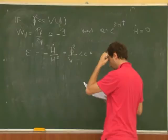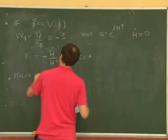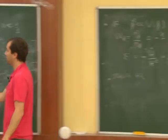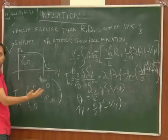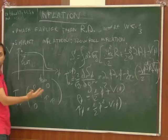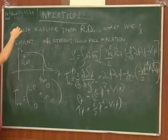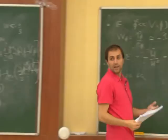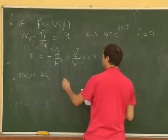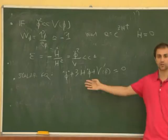During inflation, Ḣ ≈ 0, so H is approximately constant and w ≈ −1. It is not exactly −1 because the scalar field has a small kinetic energy and rolls a bit down the potential, so inflation eventually ends when the field reaches the end of the flat region. The slow-roll parameter ε must be much less than one. The equation of motion for the scalar field (Klein-Gordon equation in FRW) is φ̈ + 3Hφ̇ + V'(φ) = 0 — this is a particle moving down a potential with friction term 3Hφ̇ from gravity.